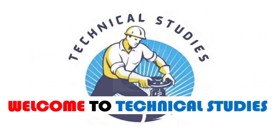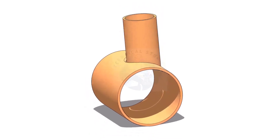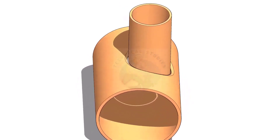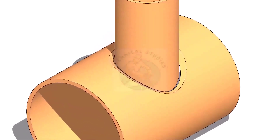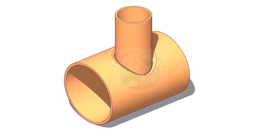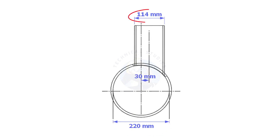Welcome to Technical Studies. In this video, we will learn how to mark an eccentric T branch. Always consider the inside diameter of the header when you want to lay out the branch. Here, the header ID is 220 mm, the branch OD is 114 mm, and the offset is 13 mm.